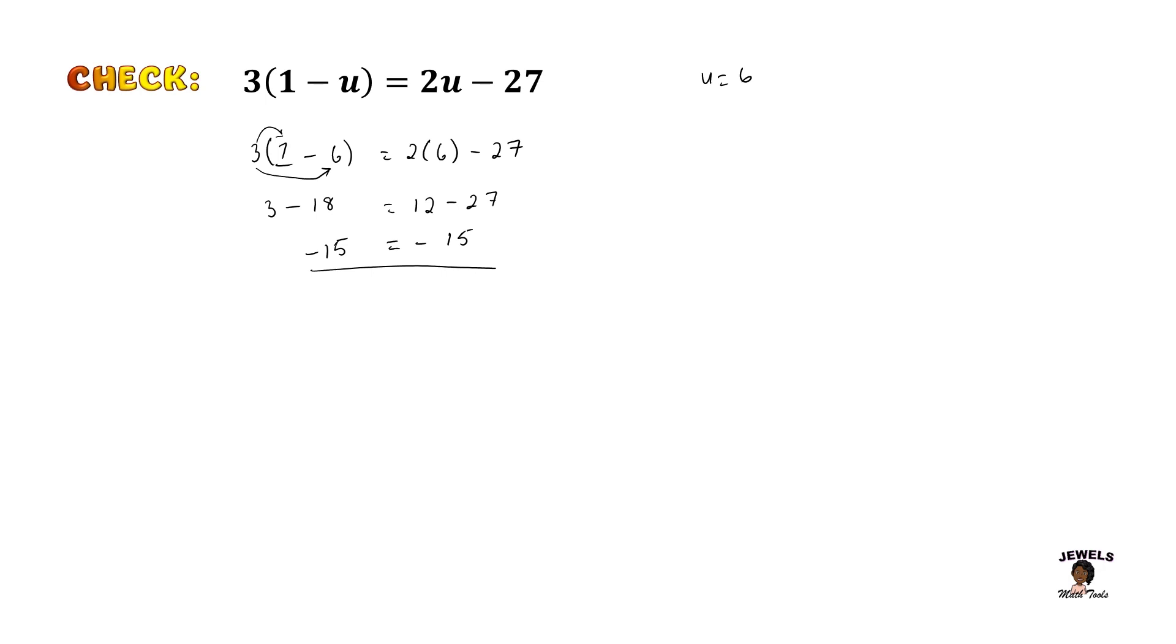Okay, so there you have it. We got negative 15 on both sides of our equation, which means that our u equals 6 is the correct solution for our equation. So remember that when you are solving your two step equation, try to play to your strength, what you're good at and what works best for you. Remember that all of us are different levels. We're working at different speeds and we're able to work through our questions differently. So play to your strength. If you need to take more than one step to solve one equation, by all means, do what you need to do.